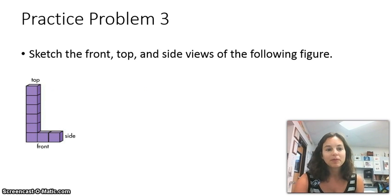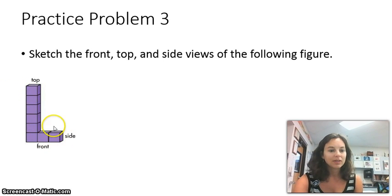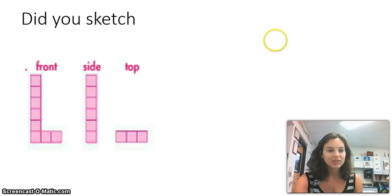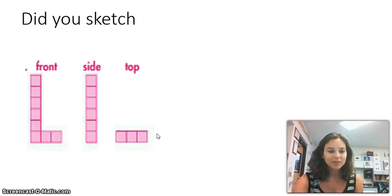Here's practice problem number three: sketch the front, top, and side views of the following figure. Make your columns — front, top, side — and draw your sketches. Did you get it right? Here is your front view, here is your side view, and there is your top view. If so, great job — give yourself a pat on the back. If not, make your corrections and we'll move on.